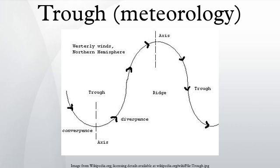If they are not marked, troughs may still be identified as an extension of isobars away from a low pressure centre. Sometimes the region between two high pressure centres may assume the character of a trough when there is a detectable wind shift noted at the surface. In the absence of a wind shift, the region is designated a col, akin to a geographic saddle between two mountain peaks.